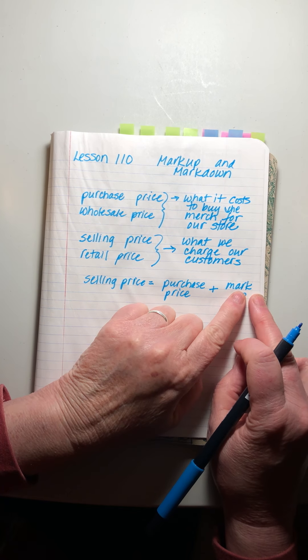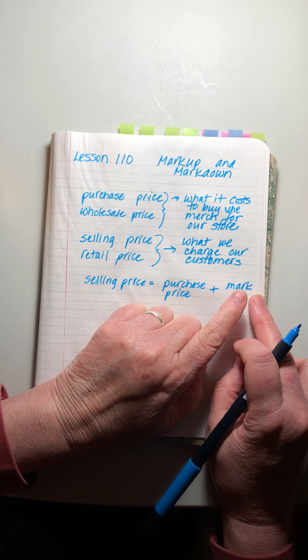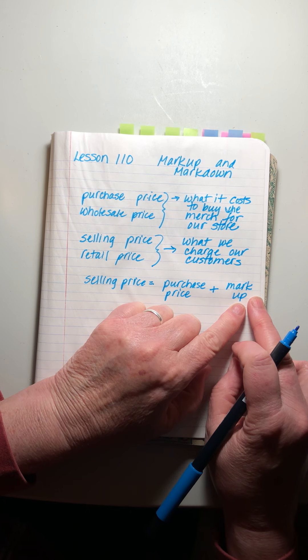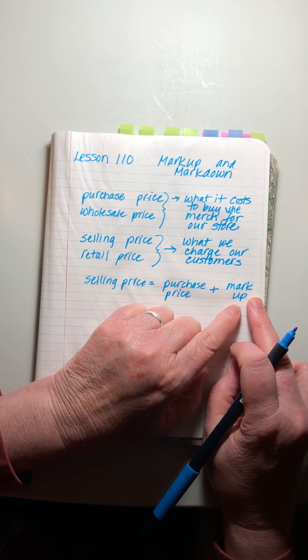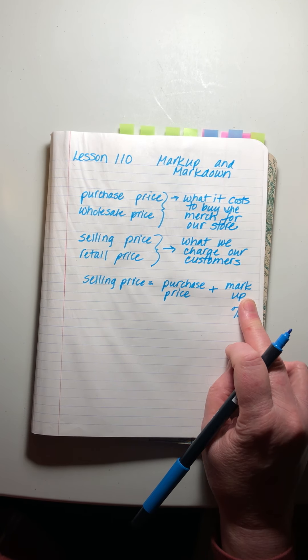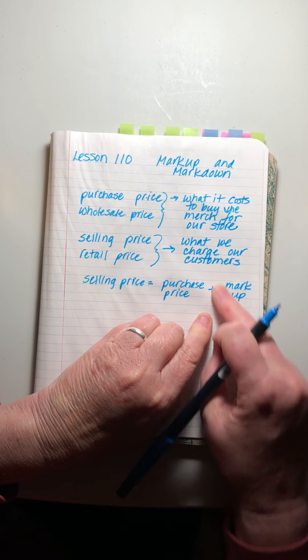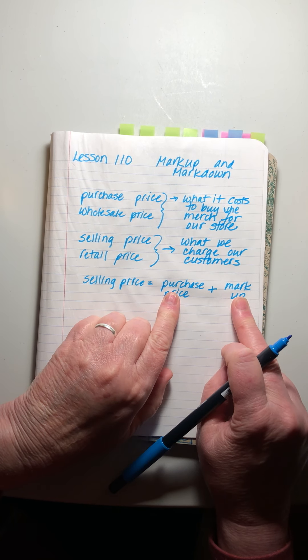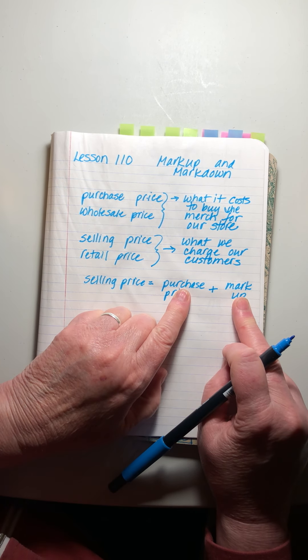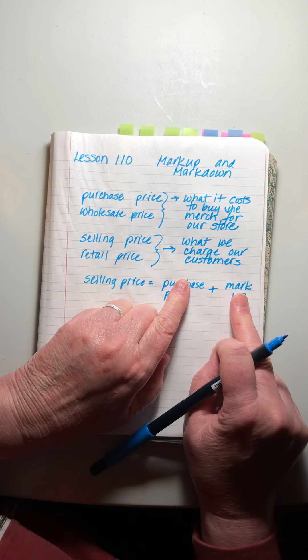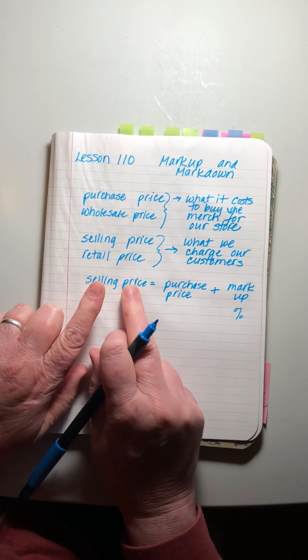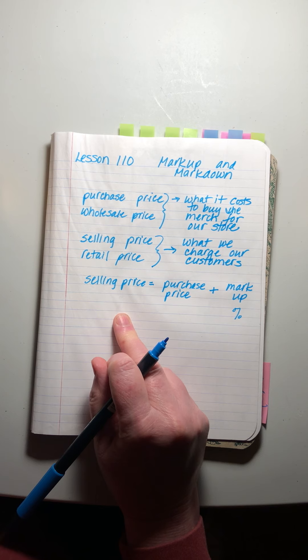It's a percentage extra that we charge our customers, and this covers the cost of running our store: paying our employees, having insurance, paying a fee to the mall for our space - all of those little extra costs that we the shopkeepers have to pay in order to run our store. We have to include something for all of those, as well as the cost of the jacket that we had to pay to North Face. We add them together to determine what our selling price is.